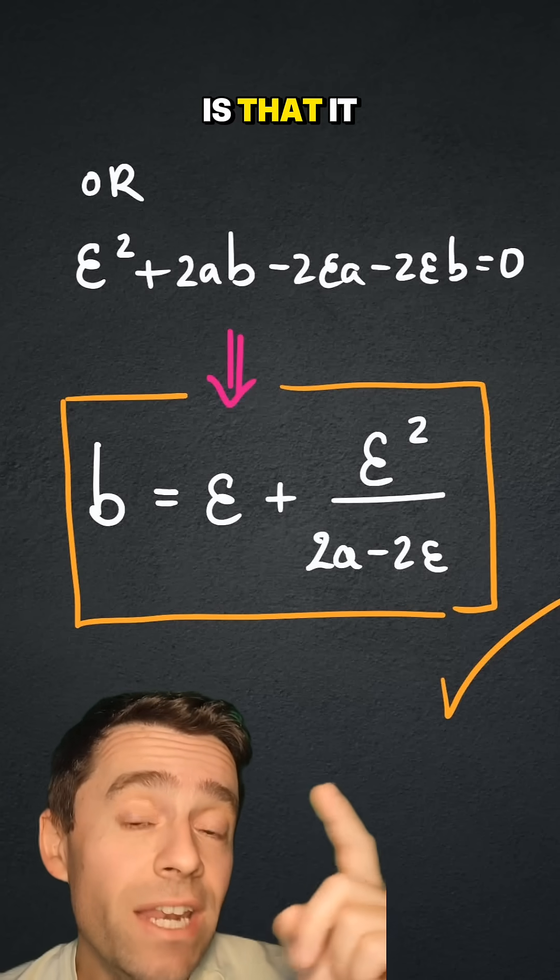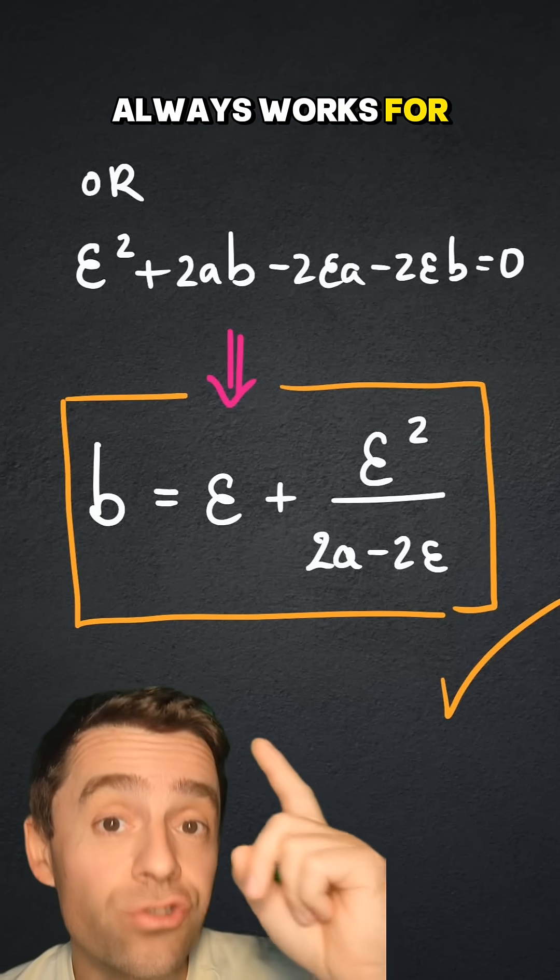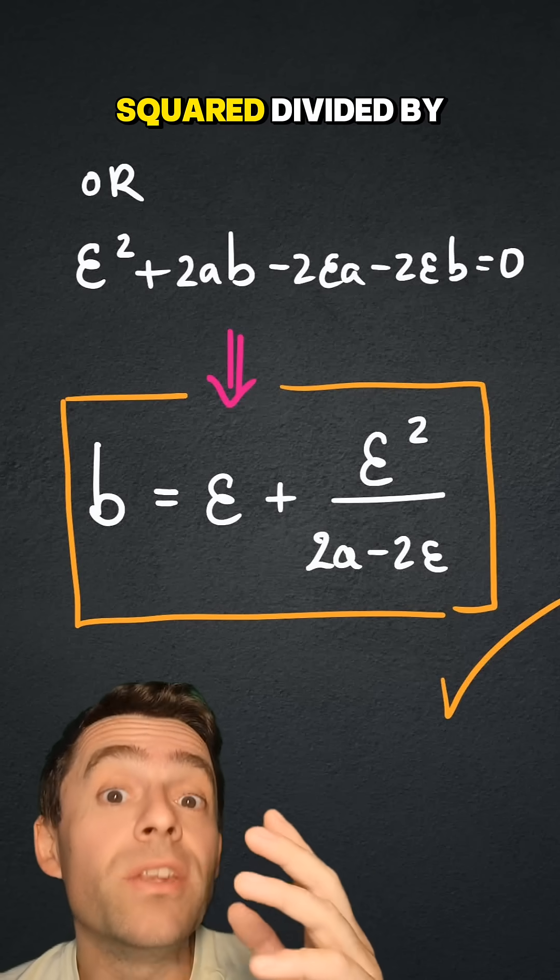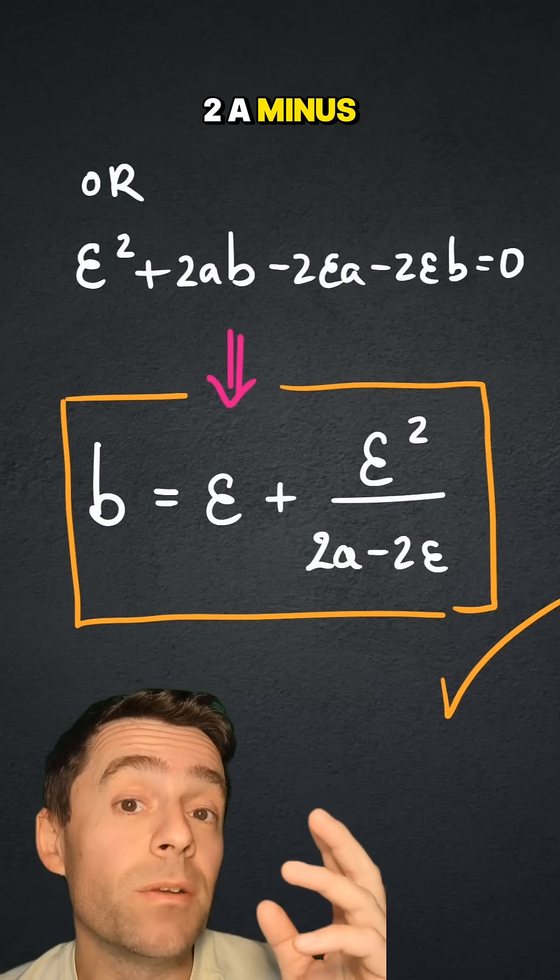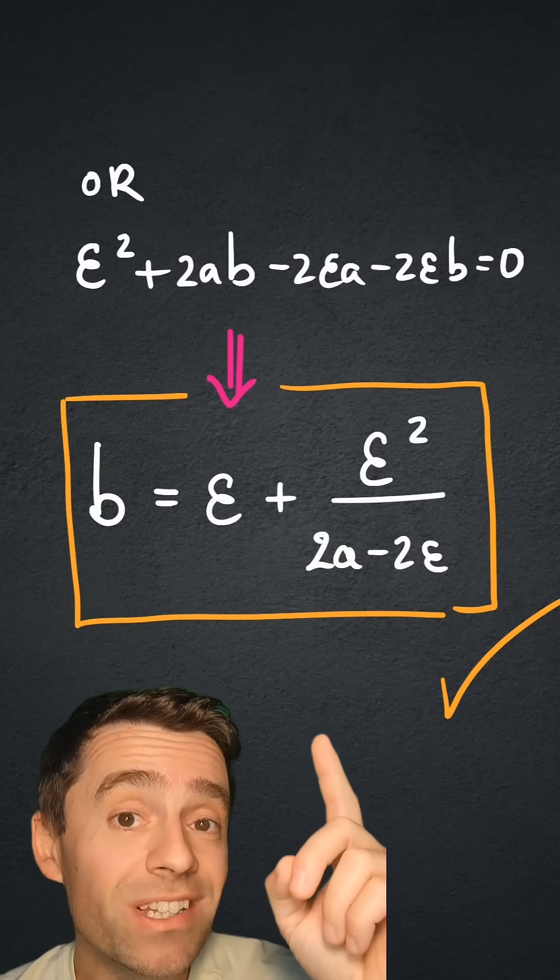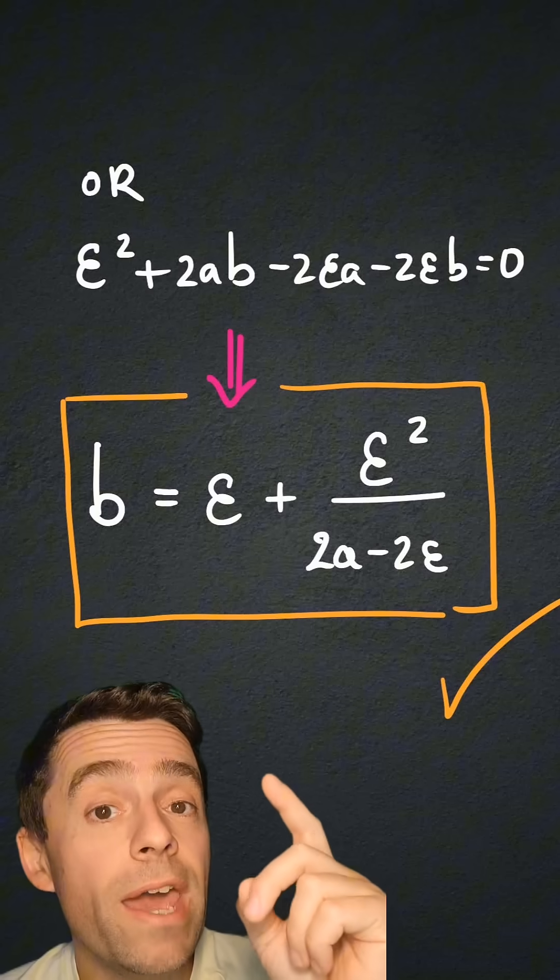This is linear in b, so I can actually solve for b in terms of epsilon and a, and the solution is that it always works for any epsilon bigger than zero. I can take b to be epsilon plus epsilon squared divided by 2a minus 2 epsilon.